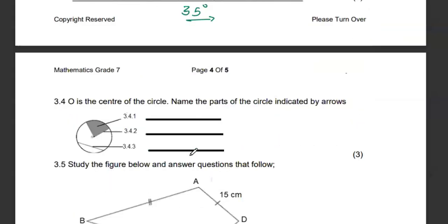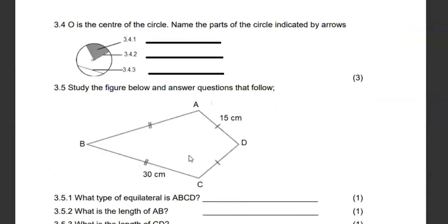Then 3.4, O is the center of the circle. They want us to name the parts. 3.4.3, that's known as a chord. 3.4.2, that's a radius. And then the area that is shaded here will be known as a segment. Some people would always call it a sector also, but I'm taking segment.